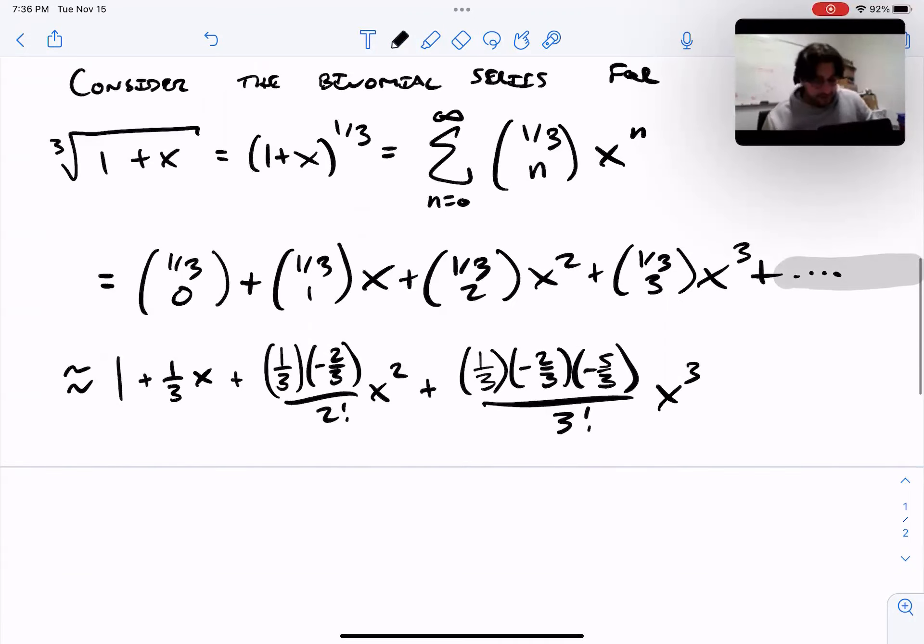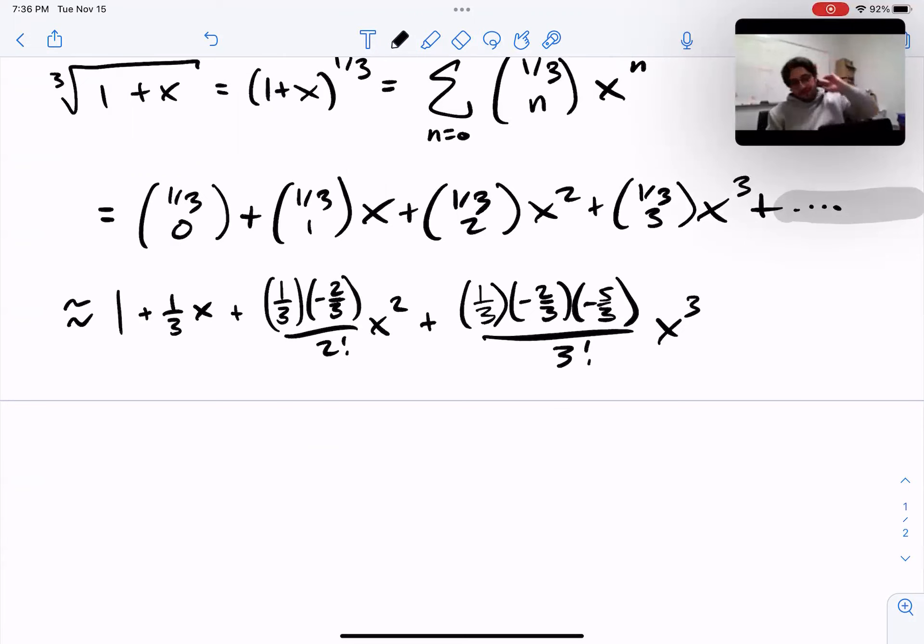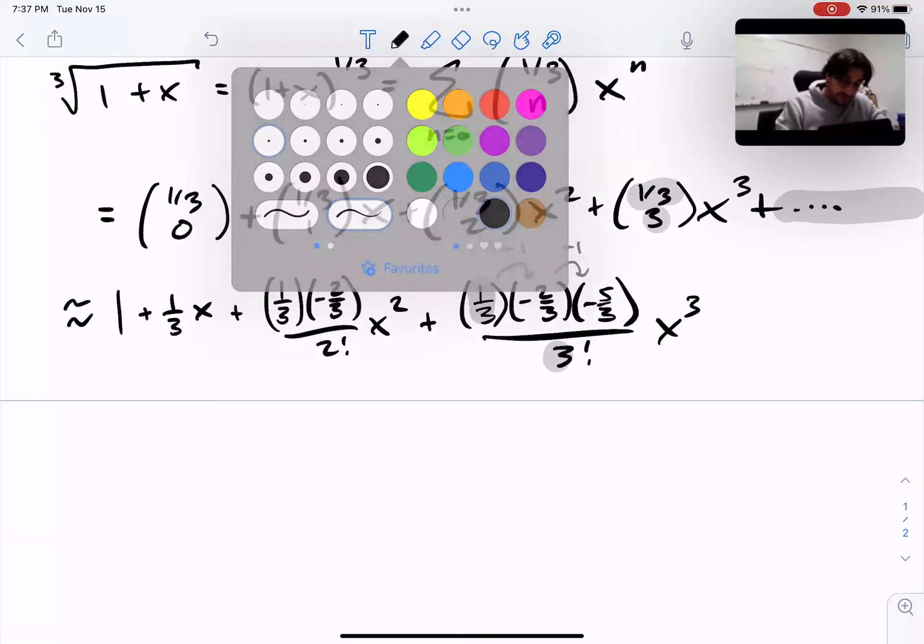This is just following how you do the n choose k notation. You always start at this number, which tells you what to start your numerator at. This number tells you what factorial goes in the denominator. How do you get these other numbers? You subtract one each time, almost like a factorial, just a weird factorial starting at 1/3. How do you know when to stop? The bottom number tells you when to stop because this says there are three, and here's one, two, three numbers being multiplied together in the numerator. That's how we know what to put there for (1/3 choose 3), and similarly for the other coefficients.